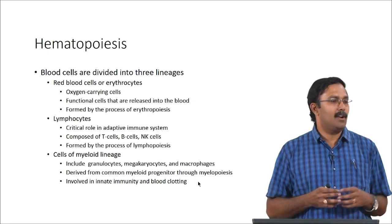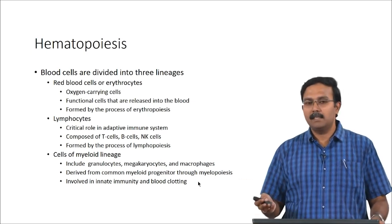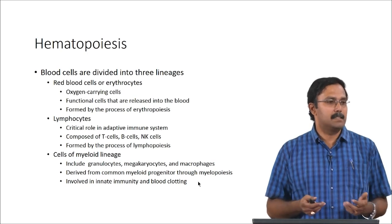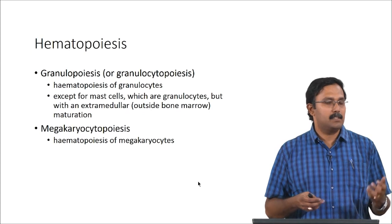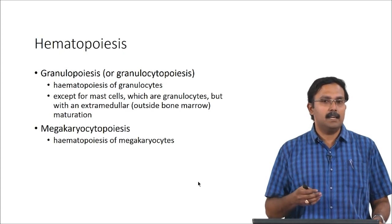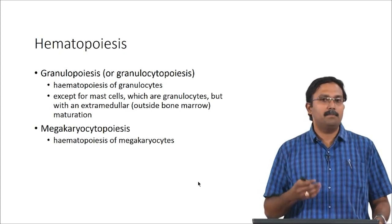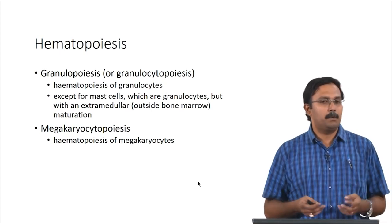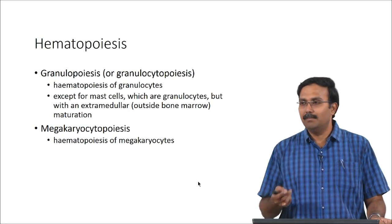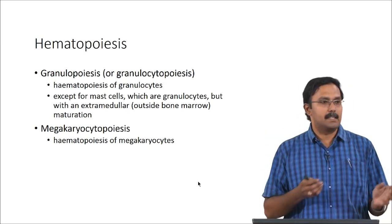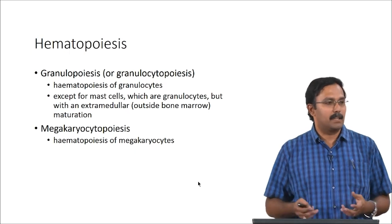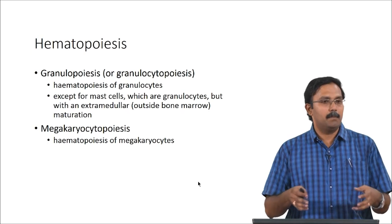These myeloid cells are also involved in innate immunity, blood clotting, and many other mechanisms — they have versatile functionality in the body. The process of forming granulocytes is called granulopoiesis or granulocytopoiesis, and this is done inside the bone marrow except for mast cells, where differentiation happens outside the bone marrow — called extra-medullary maturation. Medulla is the technical term for bone marrow. Megakaryocytopoiesis is the hematopoiesis of megakaryocytes.